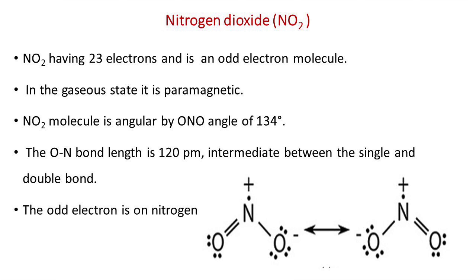Another nitrogen oxide is nitrogen dioxide, with the chemical formula NO2. Nitrogen dioxide has 23 electrons and is an odd electron molecule. In the gaseous state, it is paramagnetic. The nitrogen dioxide molecule is angular; the ONO bond angle is 134 degrees. The ON bond length is 120 picometers, which is intermediate between a single and double bond. The odd electron exists on the nitrogen atom.